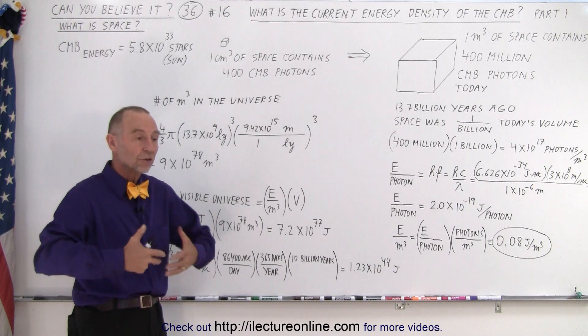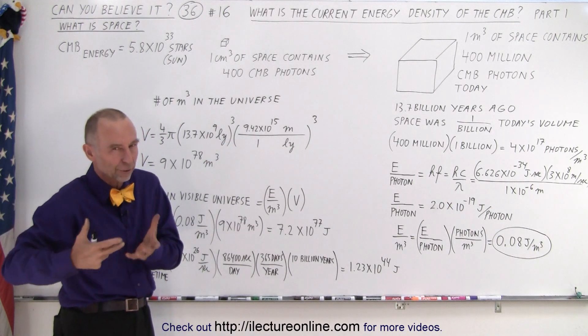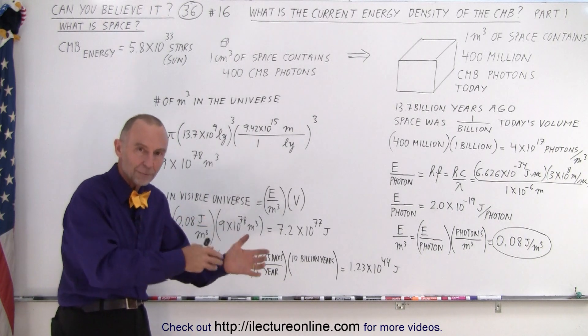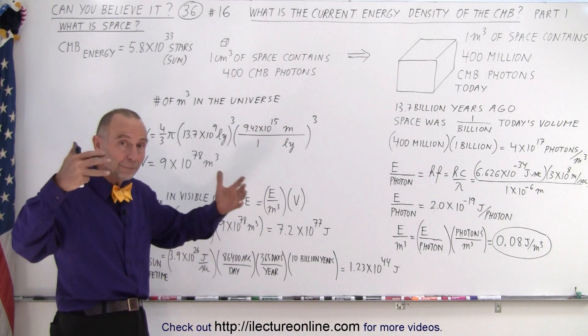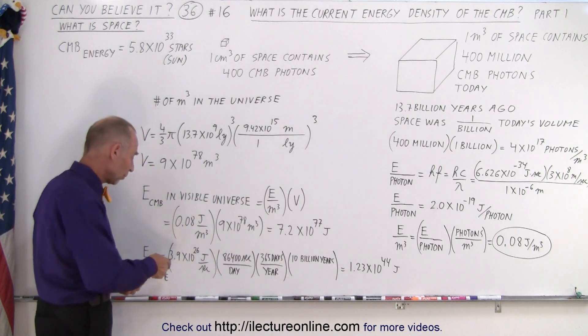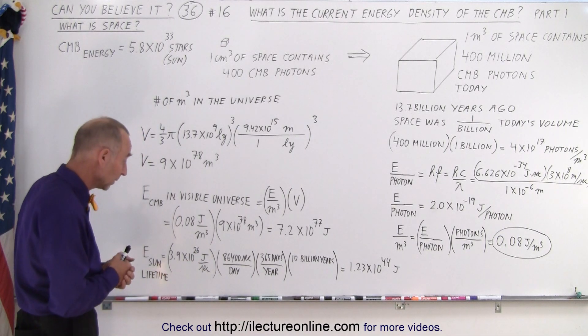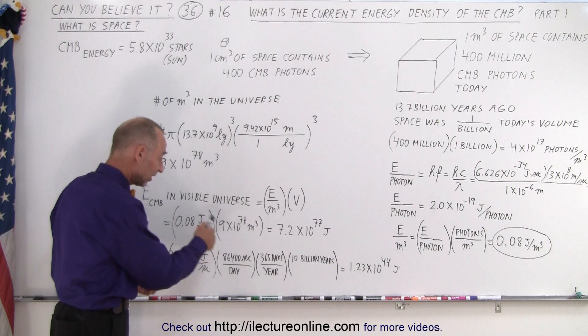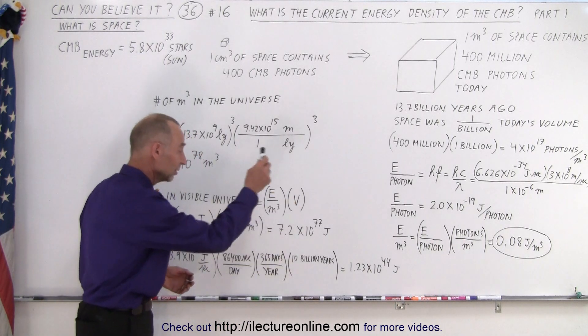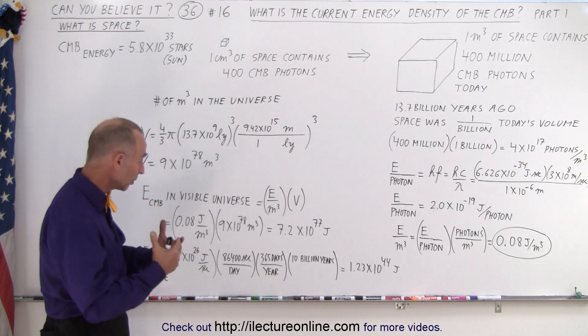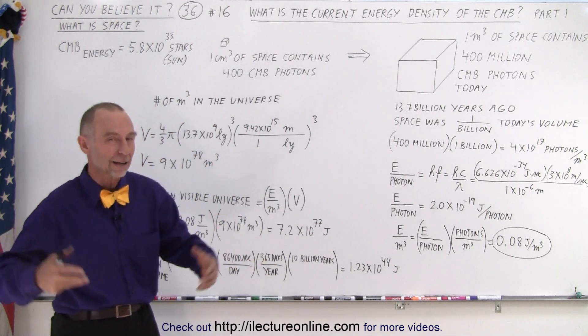Well, then I calculated how much energy our sun will put out in its 10 billion year lifespan. The sun has been around for almost 5 billion years. It'll keep doing this for another 5 billion years. So, how much energy will the sun put out in 10 billion years as a main sequence star? Well, the current energy output per second is 3.9 times 10 to the 26 joules. There's 86,400 seconds in a day, 365 days in a year, and the sun will last for 10 billion years, which means the sun will put out 1.23 times 10 to the 44 joules in its entire lifetime.